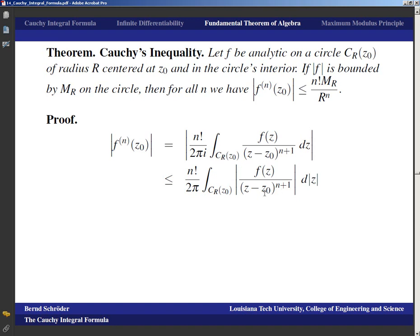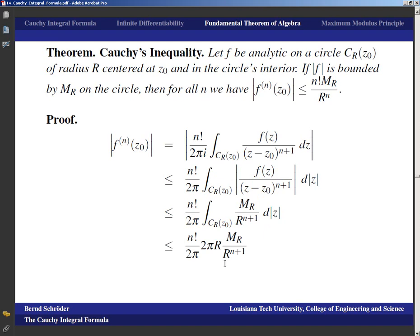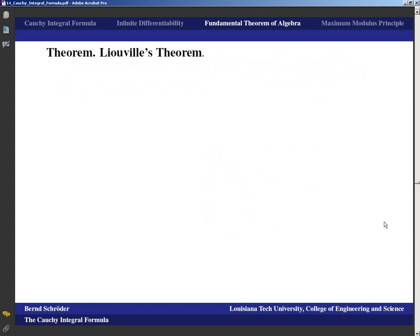Now we prove Liouville's theorem: if f is an entire function (analytic on all of ℂ) and bounded, then f is constant. Since |f| ≤ B, applying Cauchy's inequality with n = 1 for every z₀ in ℂ gives |f′(z₀)| ≤ 1 · B / R. As R → ∞, this goes to zero. Since R is arbitrary and z₀ is arbitrary, f′ = 0 everywhere, which implies f is constant.